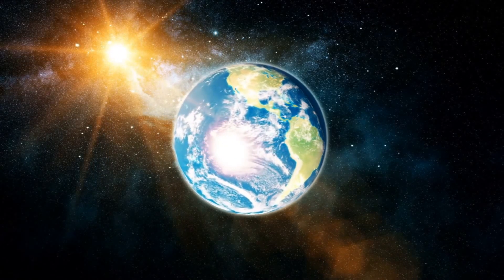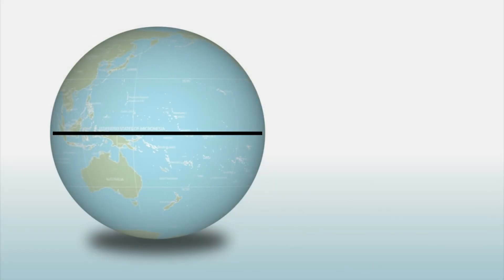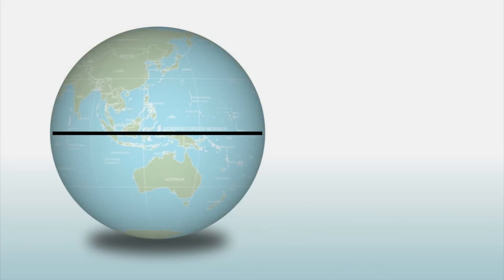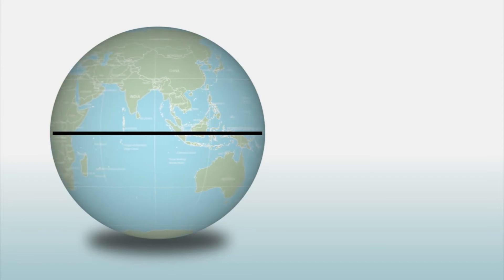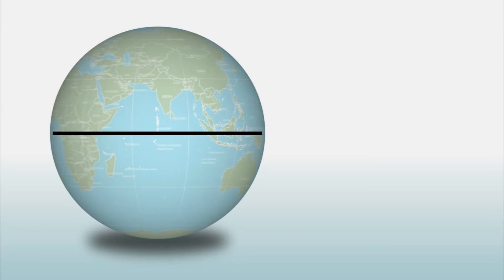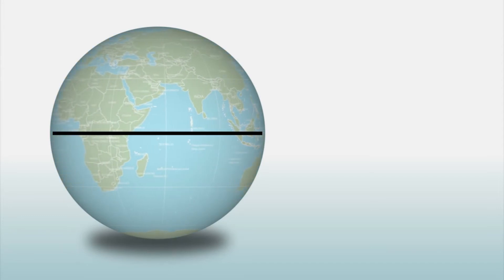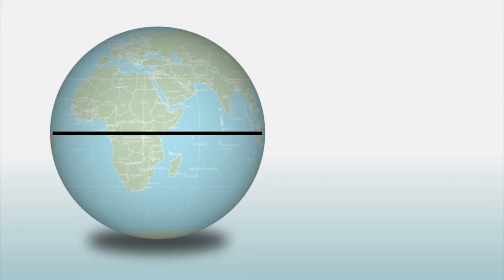At the equator, there are no seasons because each day the sun strikes at about the same angle. Every day of the year, the equator receives about 12 hours of sunlight.